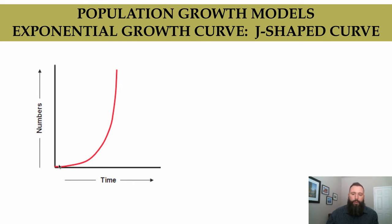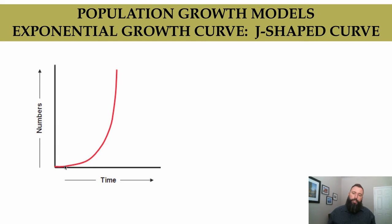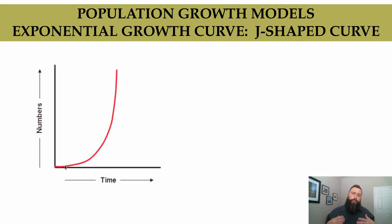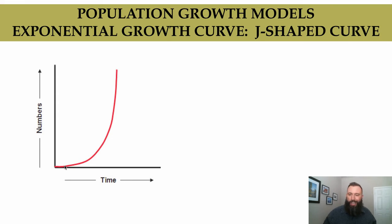You have to imagine what's happening in this population. We have a smaller population in the beginning, but those individuals are reproducing and producing their own offspring. Those offspring, over time depending on the species, will start to reproduce on their own, creating their own offspring. Over time, we start to increase that population exponentially as more and more offspring produce their own offspring, which in turn create their own offspring, and on and on it goes.